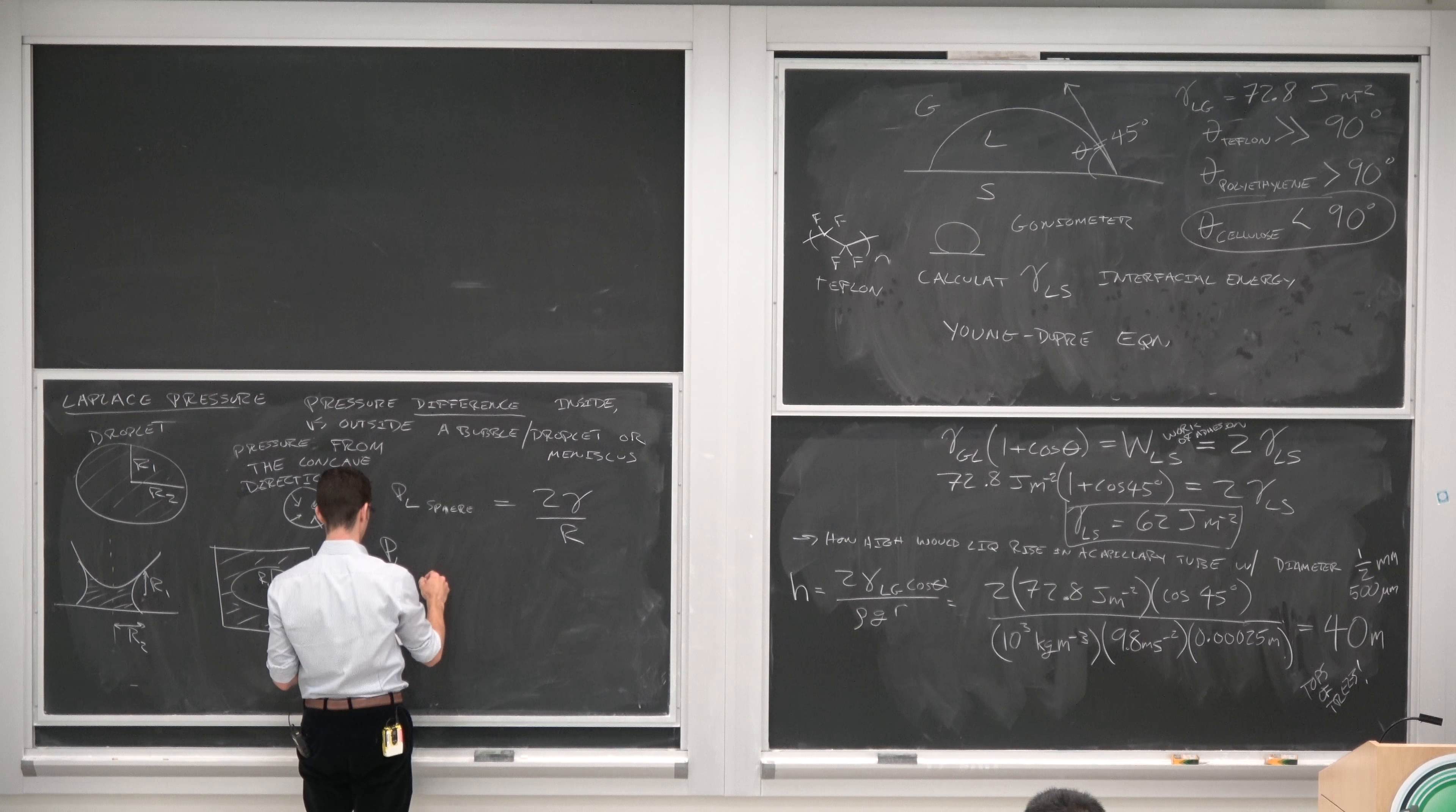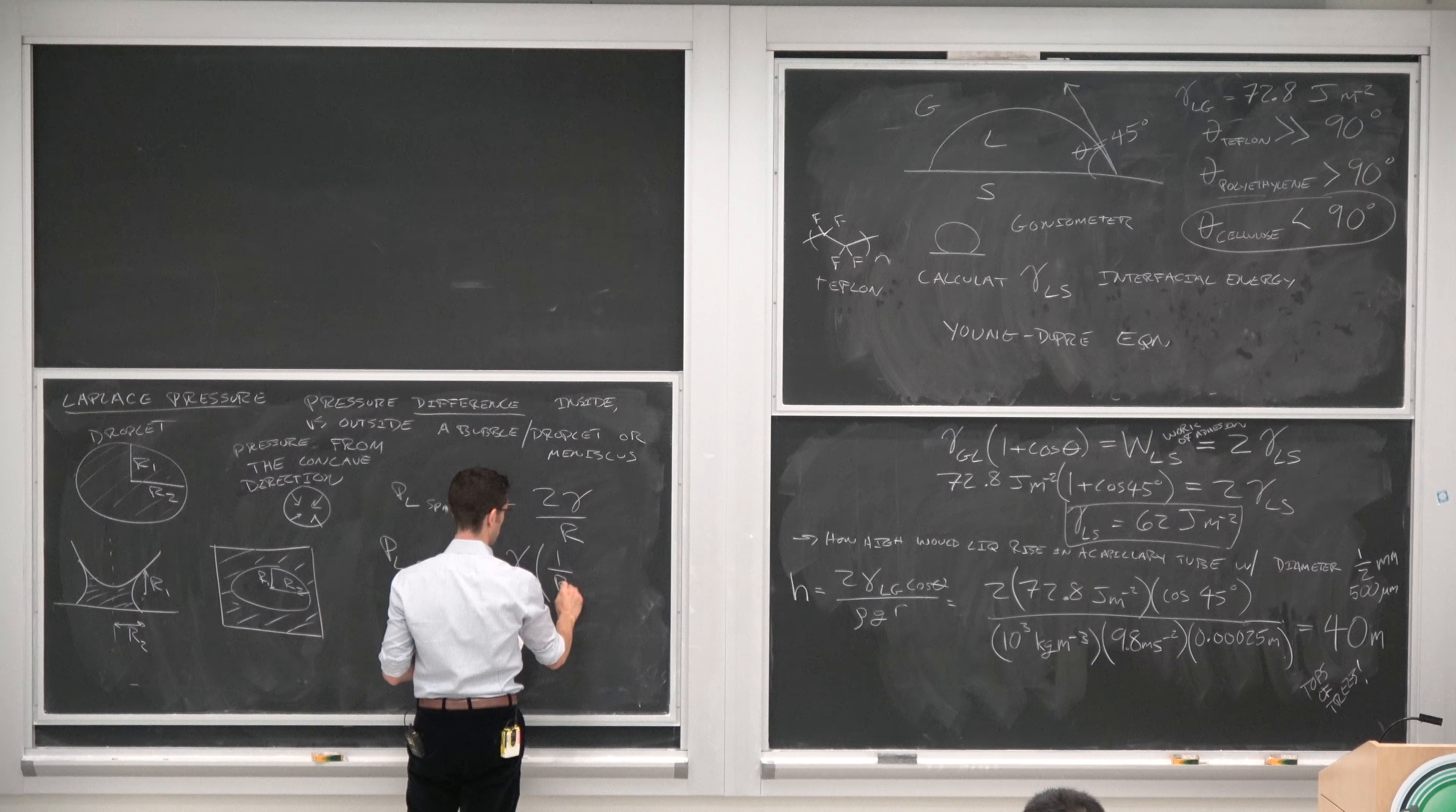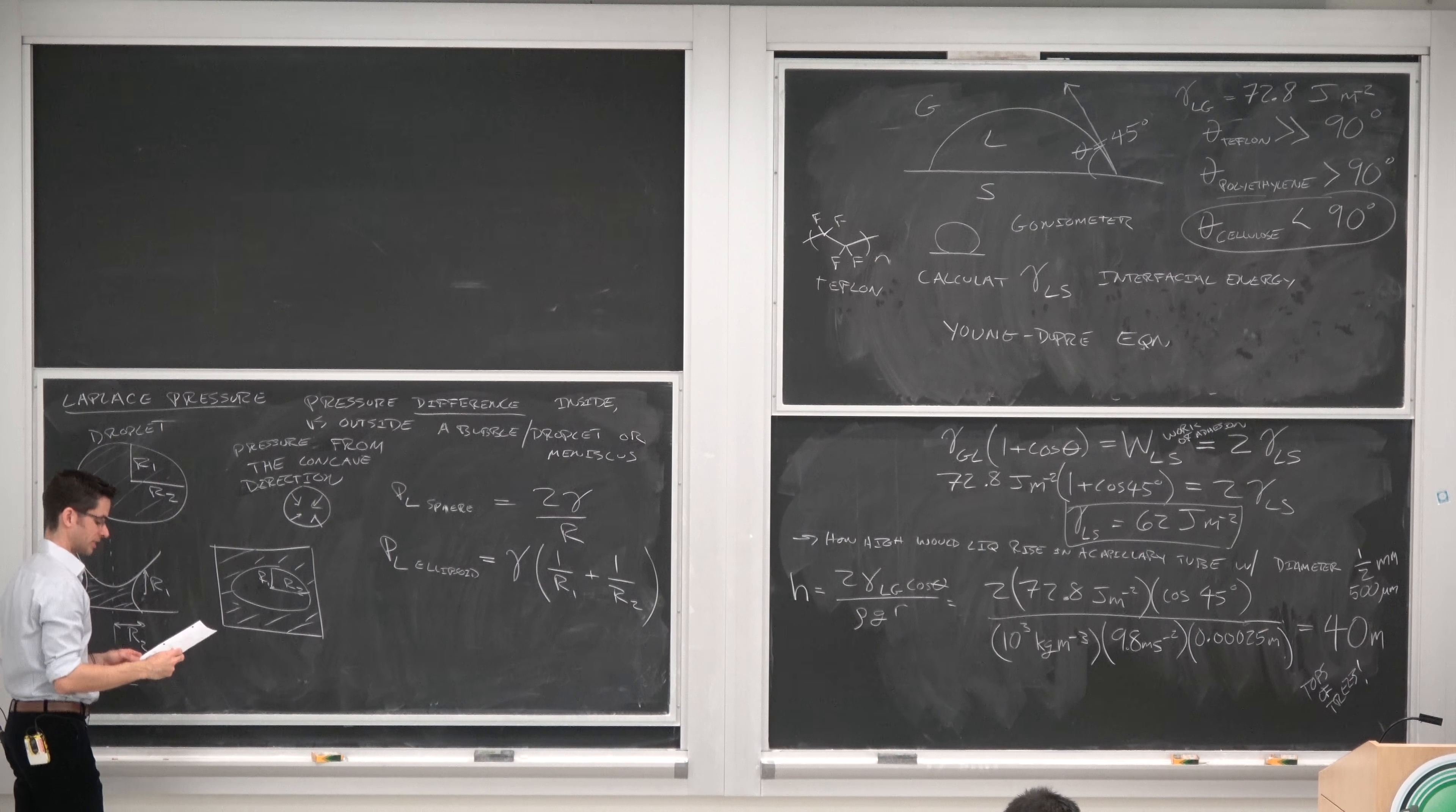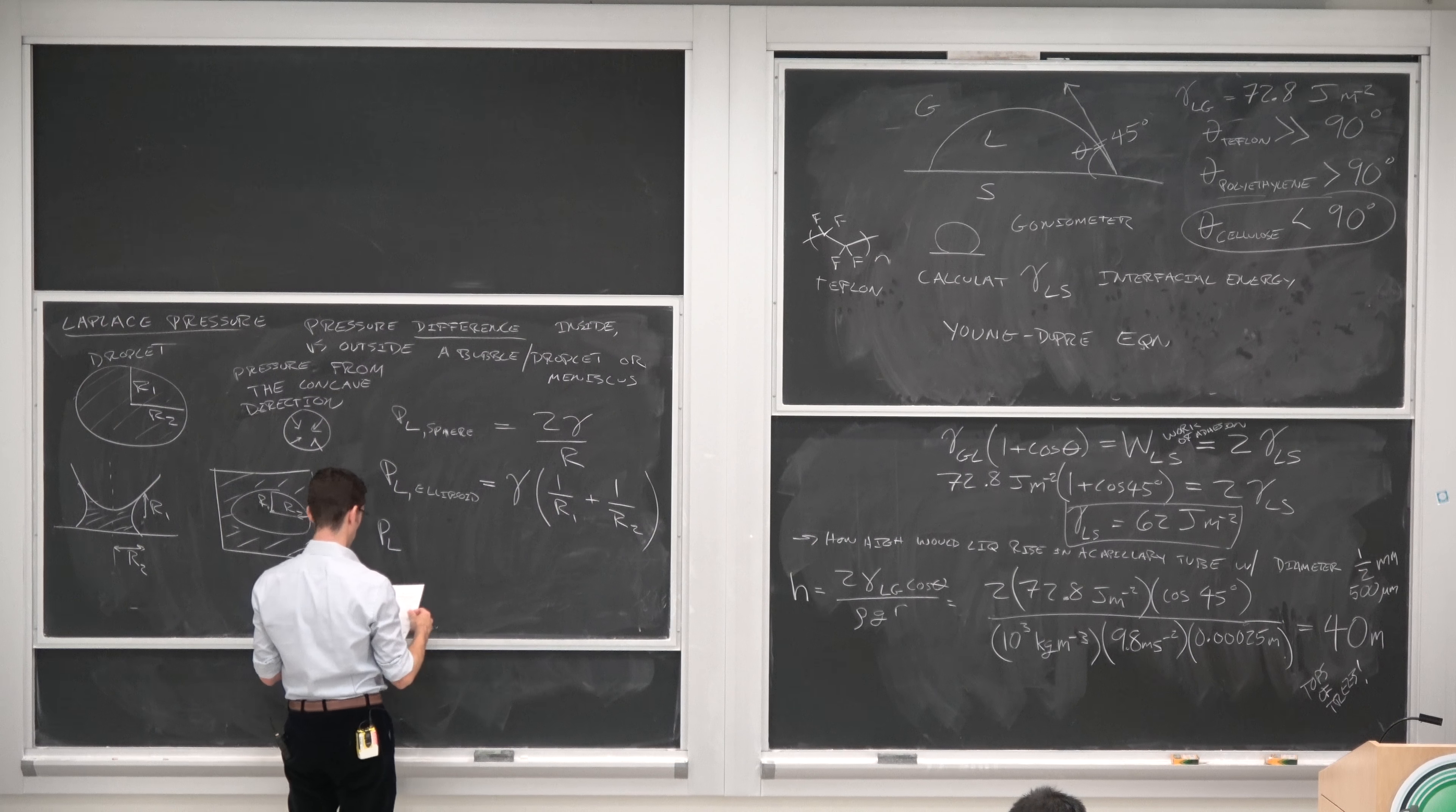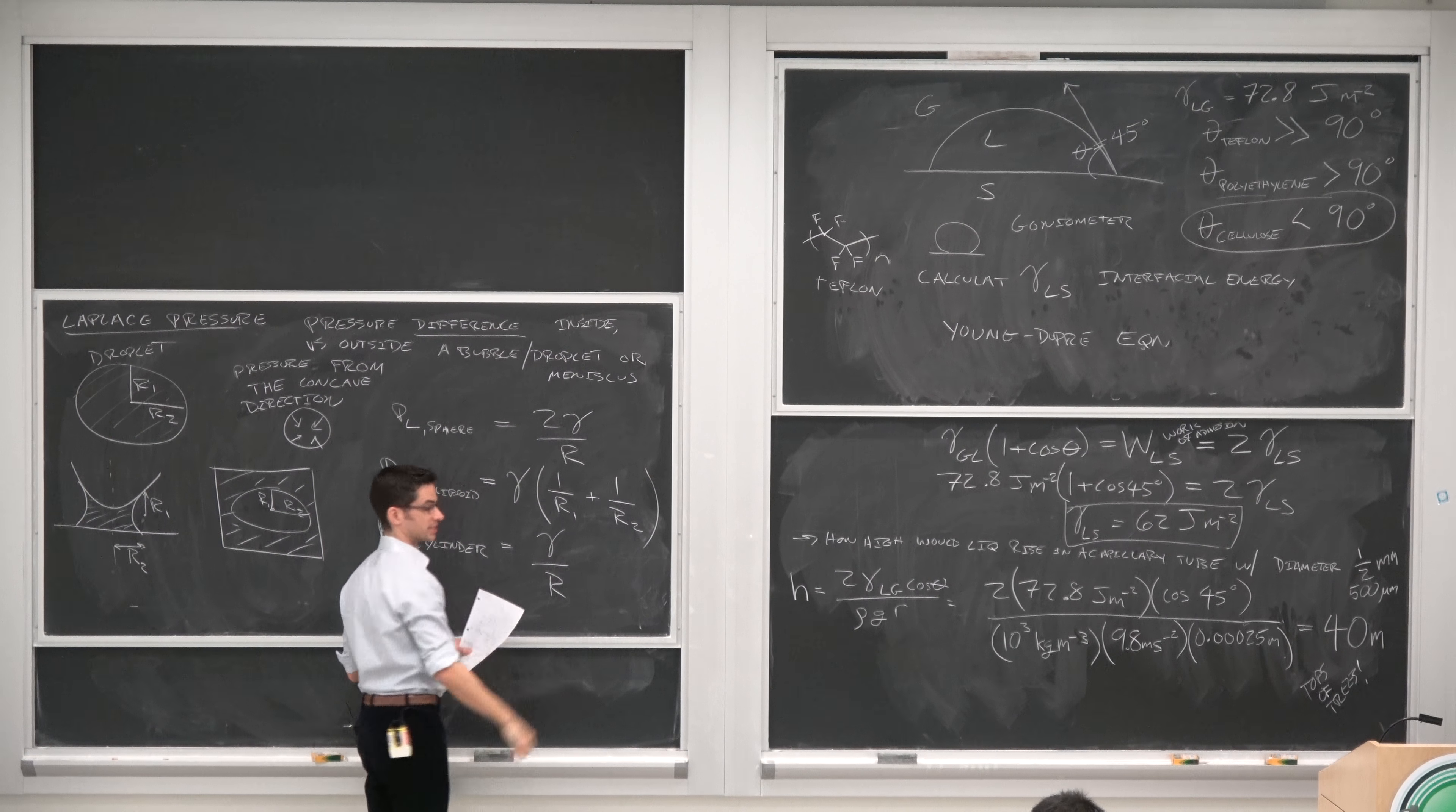The Laplace pressure for an ellipsoid is gamma times 1 over the first semi-major axis R1 plus 1 over the second semi-major axis. And the Laplace pressure for a cylinder is just gamma over R.